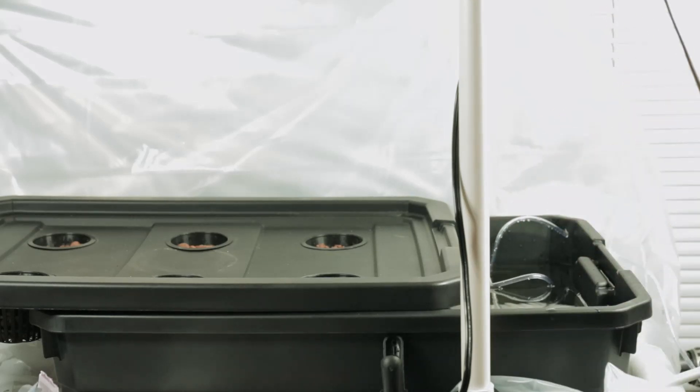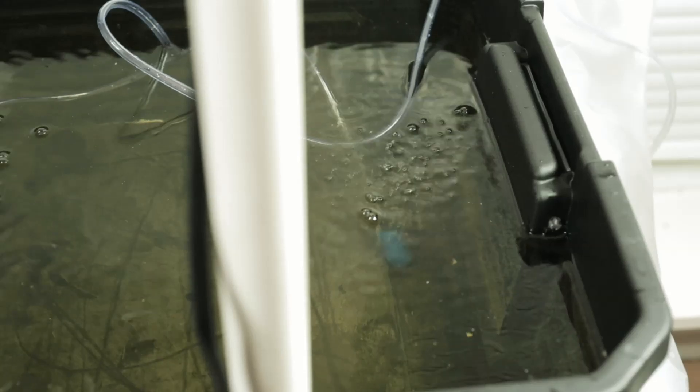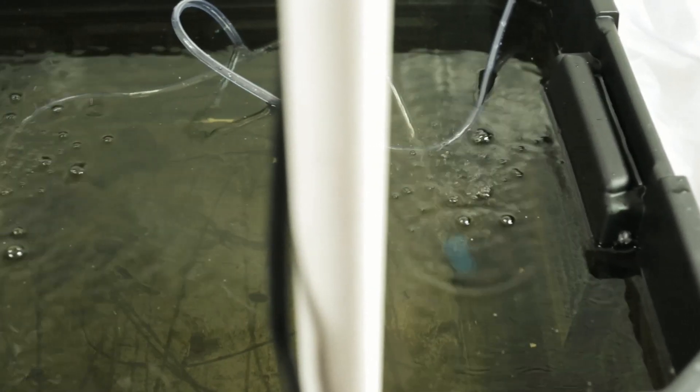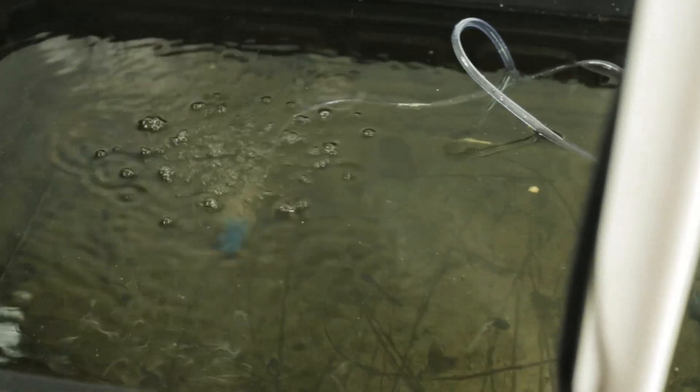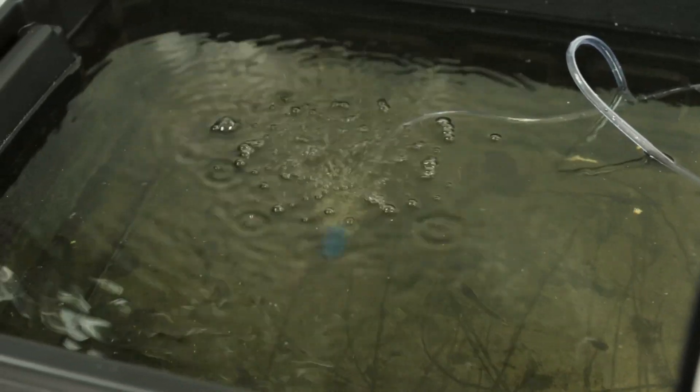It's important to prevent light from getting inside of your reservoir. That's why it's good to have a black one or something that's very thick and dark. Any light that gets in could cause a potential algae bloom which would eat up your nutrients causing an imbalance.